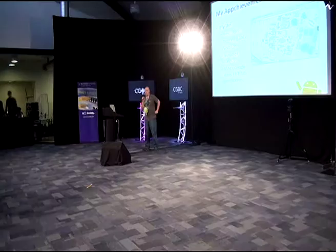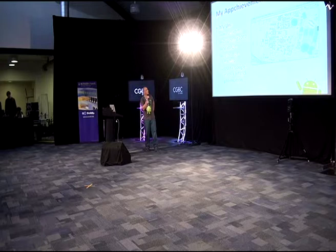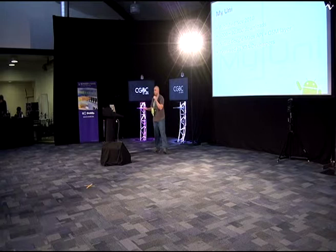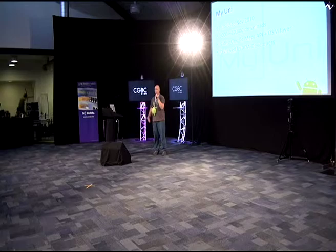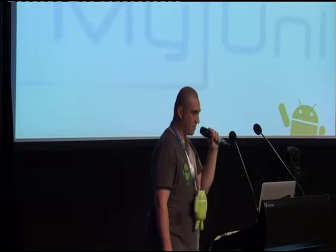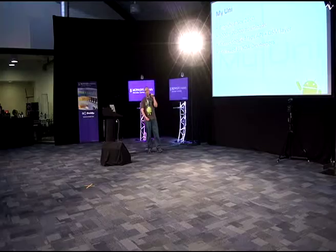So I went out and got myself an HTC Desire and wrote an Android app for it. I thought, cool — I could give this to Monash as a sort of present, or I can expand it and go universal. So I named it MyUni, published it onto the Android market in 2010. Since then I've had 5,000 to 10,000 downloads. It uses native Google Maps and an OpenStreetMap layer. OpenStreetMaps is basically a Wikipedia of maps — any user can register an account and edit points and places on the map.